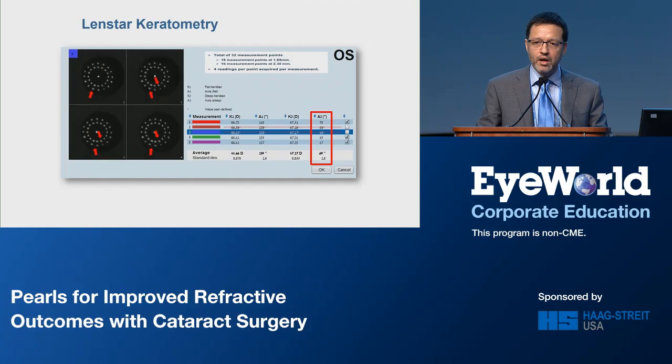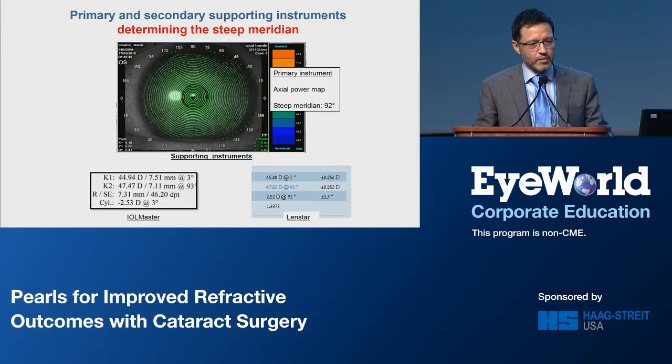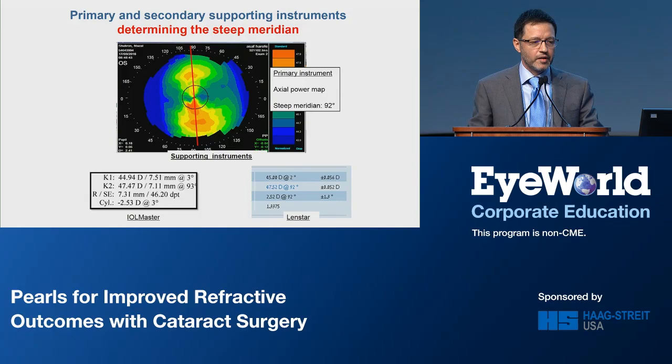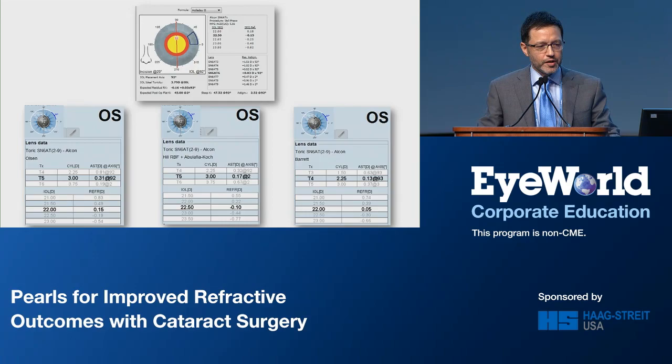Let's go quickly through one calculation together. This is a 59-year-old female with cataract and with-the-rule astigmatism. The first thing I do is look at the mire to confirm it looks okay. Then I make sure we are dealing with a pretty regular and symmetrical astigmatism. It's advisable to follow Warren Hill's methodology and use primary and secondary supporting instruments in order to determine the steep meridian, and then do the same for the power difference between the meridians.